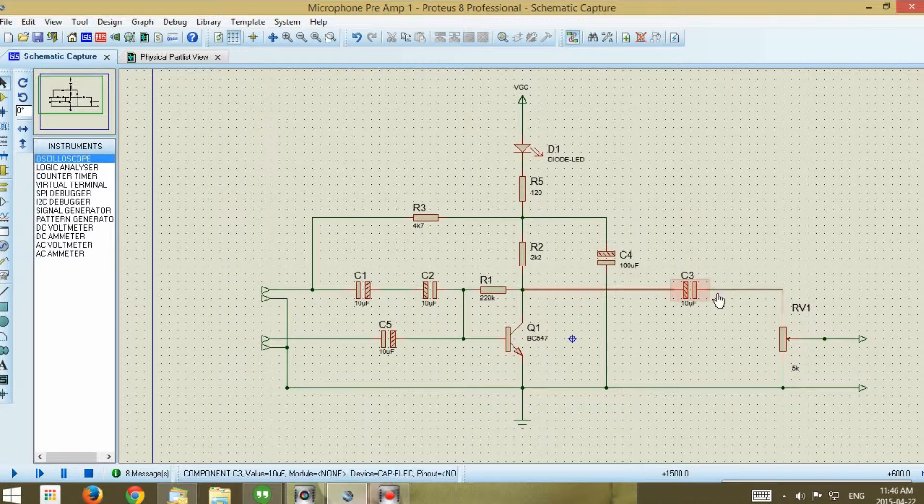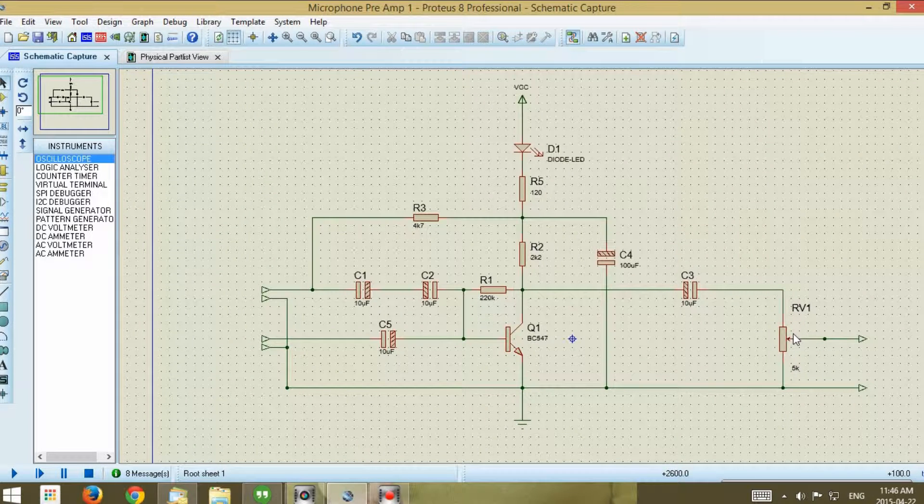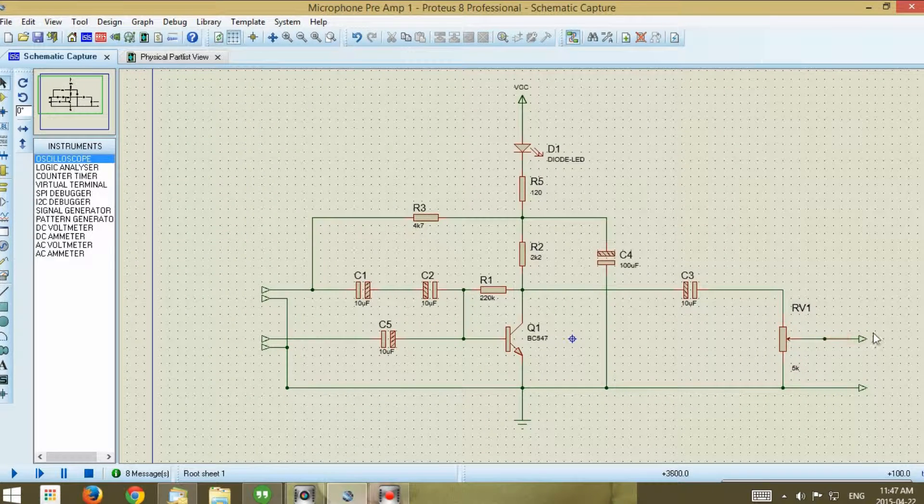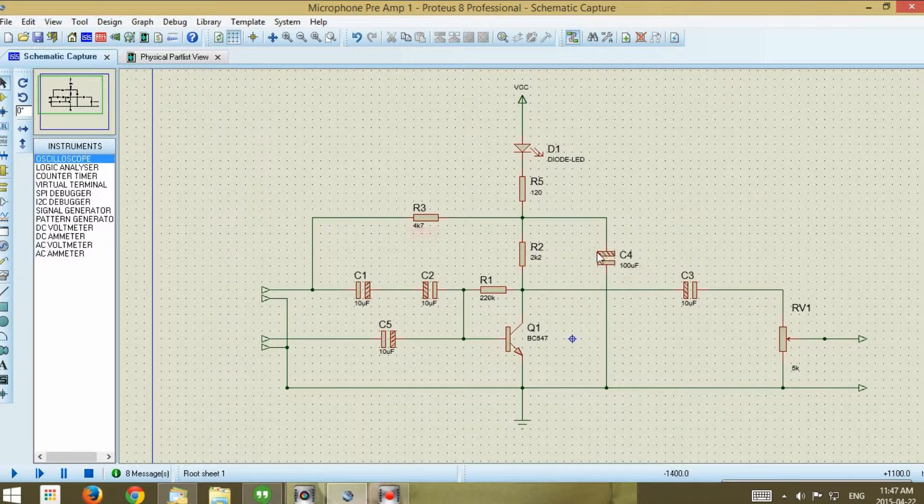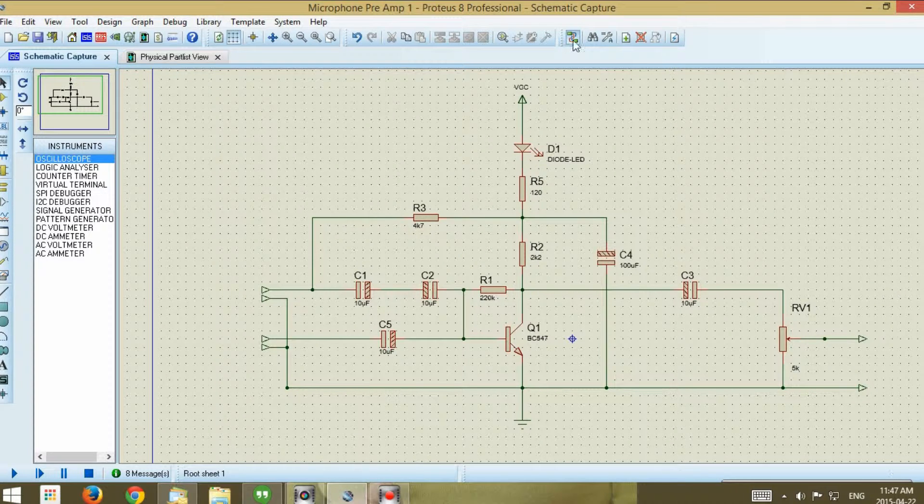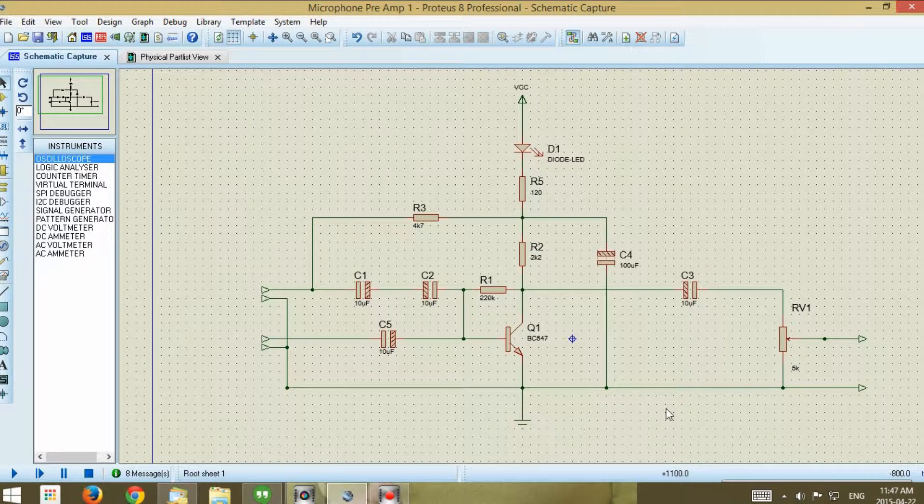This again will block your DC from coming out here so you'll get a pure AC signal which will then go across this resistor. This resistor sets your output impedance of the circuit. At the moment I've got a 5k in there. This is going to preset your output impedance and it's also going to set your level out from this audio stage either into the next stage or directly into your rig depending on which way you want to set it up.